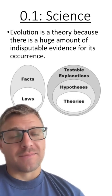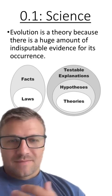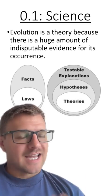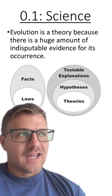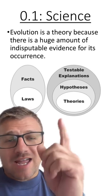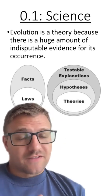For example, evolution is a theory because there is a huge amount of indisputable evidence for its occurrence. Evolution has been tested time and time again, and all of the scientific evidence supports that evolution occurs. However, evolution will never become a law because they're just describing two different things.